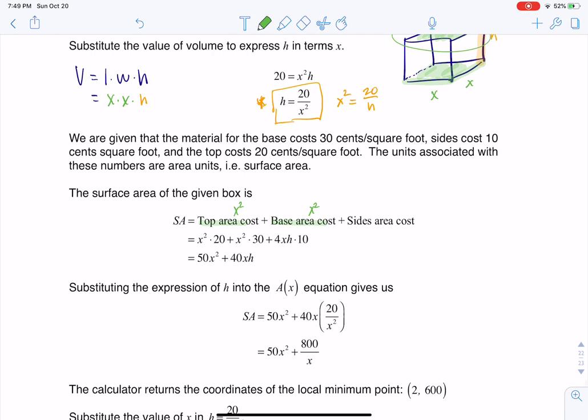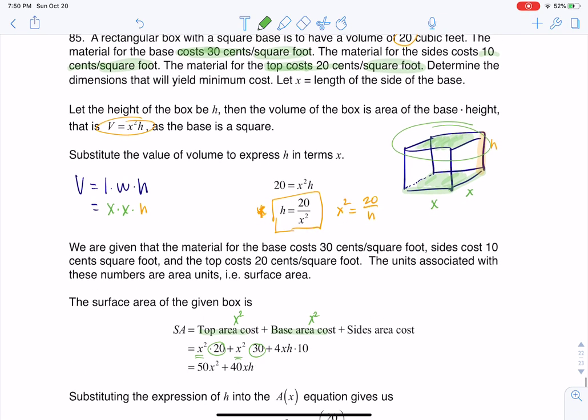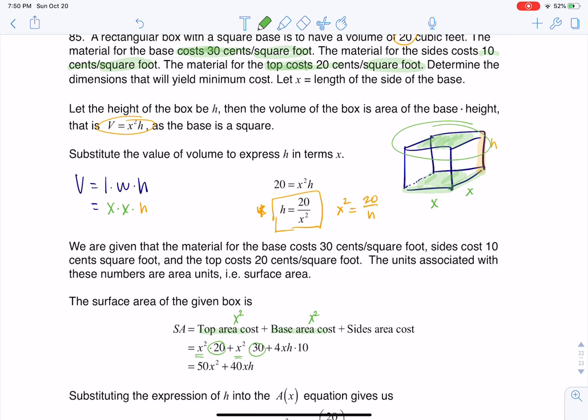So that's why I have these X squareds down here, but then you see the 20 and the 30 because that was the cost. It was 20 cents per square foot for the top and 30 cents per square foot for the bottom.